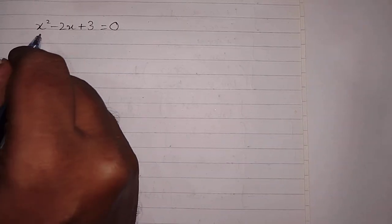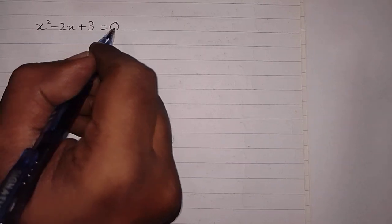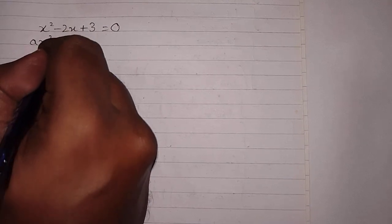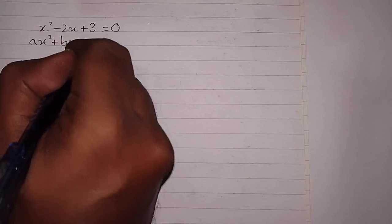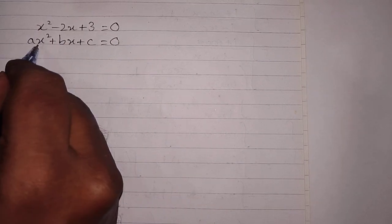In this video we will find the nature of the roots of the given quadratic equation. The given quadratic equation is x squared minus 2x plus 3 equals 0. We will compare the coefficients with the standard quadratic equation, which is ax squared plus bx plus c equals 0.